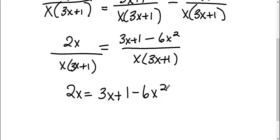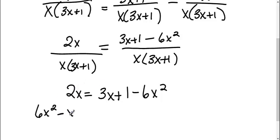To solve this, I need to get everything onto one side. I'm going to move everything to the left side so I can make the 6x squared term positive — so I add that to the other side to get positive 6x squared. Then I subtract 3x to move it over, giving me 2x minus 3x, which is negative x. Then I move the 1 to the other side by subtracting it, so I get negative 1 equals 0.